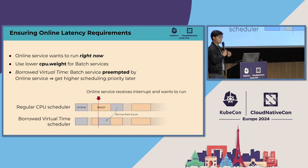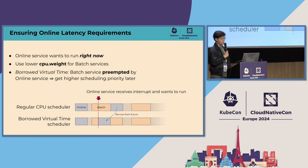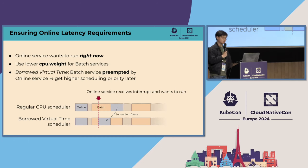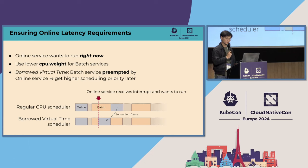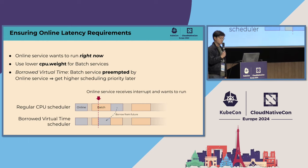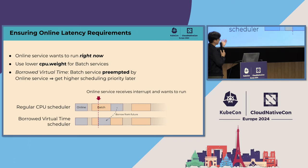By downgrading suitable services to this batch service level, not only did we unlock a new class of resources that is much larger than before, but this also helped us to free up scarce resources for other online services to use. To support the co-location of both online and batch services on the same node, we make use of several techniques available in the Linux kernel. We set a lower CPU dot weight inside the cgroup for batch services, which ensures other online services always get the highest share of CPU time when needed. We also made adjustments to the Linux kernel CPU scheduler which allows online cgroups to preempt batch cgroups through a concept known as borrowed virtual time, or BVT. This way, we can ensure that latency SLOs for online services can still be retained, and they can respond to bursts of user traffic at the expense of simply delaying execution of batch services for a short while.